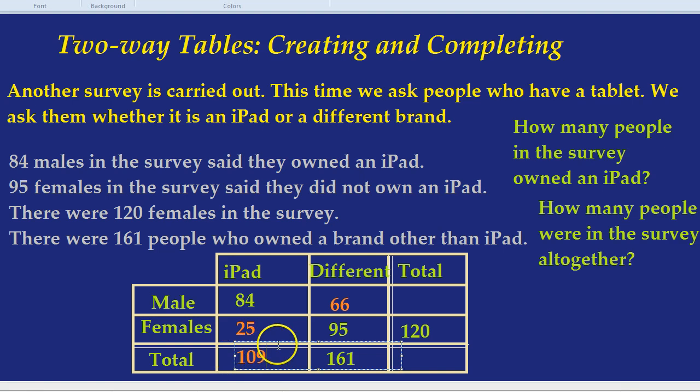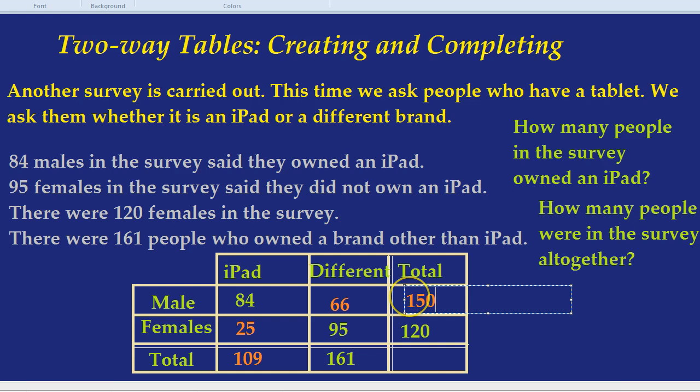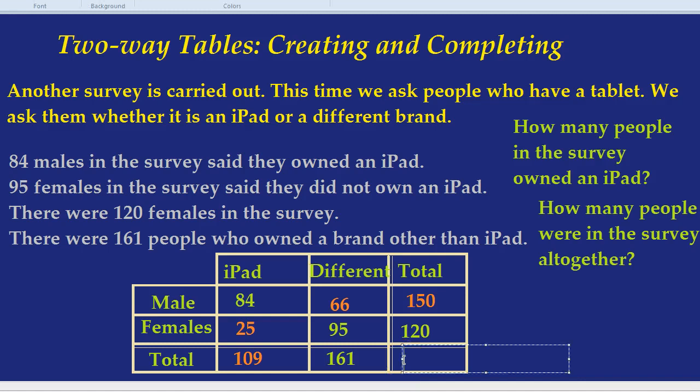Notice how quickly we're answering our questions. How many people in the survey owned an iPad? 109. How many males were there? Well, 84 plus 66 would be 150. And finally, how many people in the survey altogether? Using our incredible two-way table, 120 plus 150 will give us the number of males and the number of females together, which is the total number of people, which is 270.